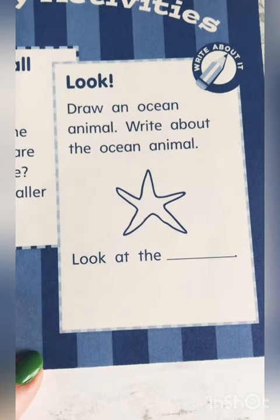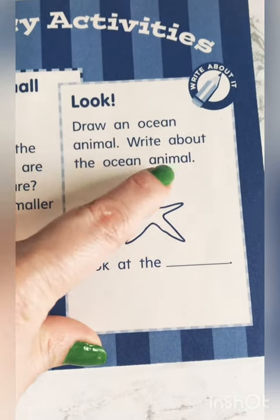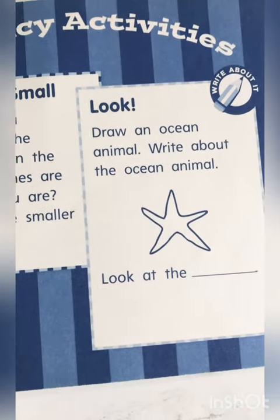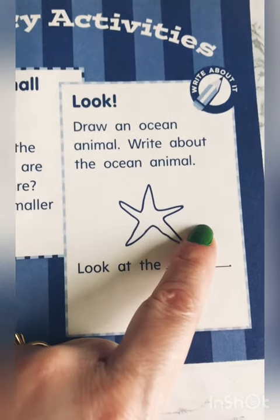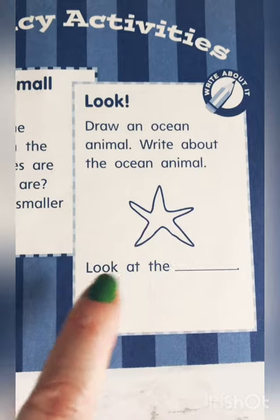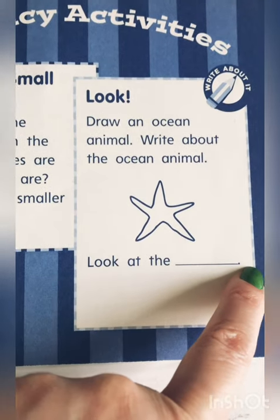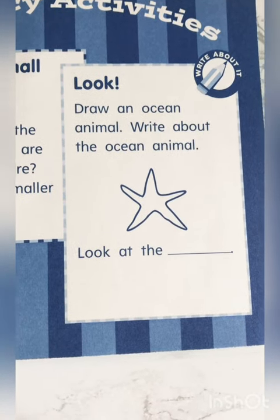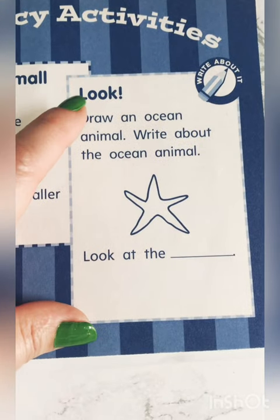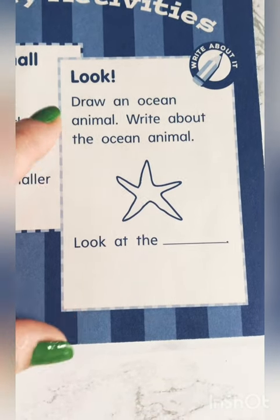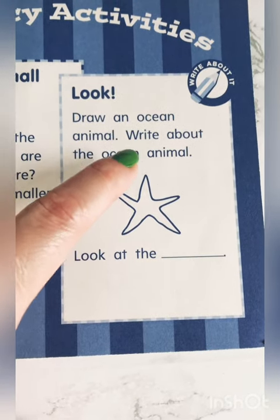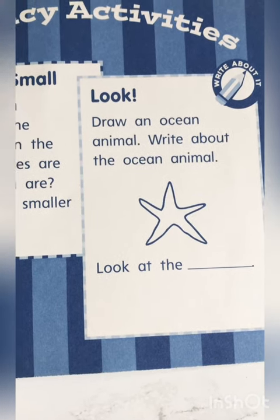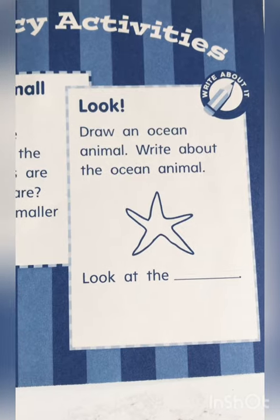And as an extra activity here, it says: Look. Draw an ocean animal. Write about the ocean animal. What you can do is write about any ocean animal and write a sentence about it — like the starfish, or any other animal from the ocean. Esta es como una extra actividad que ustedes pueden hacer. Pueden dibujar cualquier animal del océano. Y pueden poner: Mira. Esto es lo que yo veo. Una estrella de mar. Or a seahorse, or anything that you can see in the ocean. Puede ser cualquier animalito que ustedes recuerden del océano.